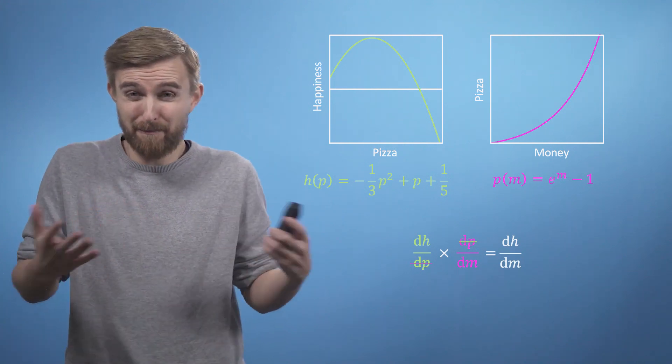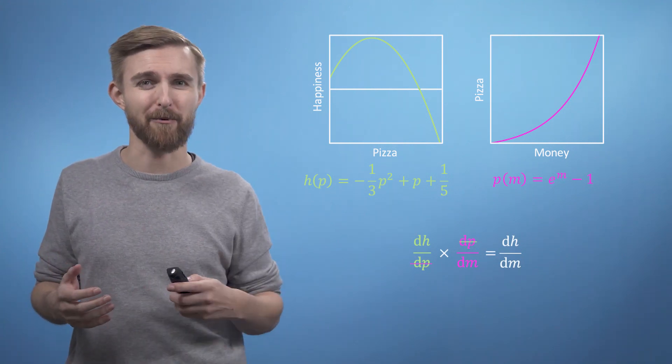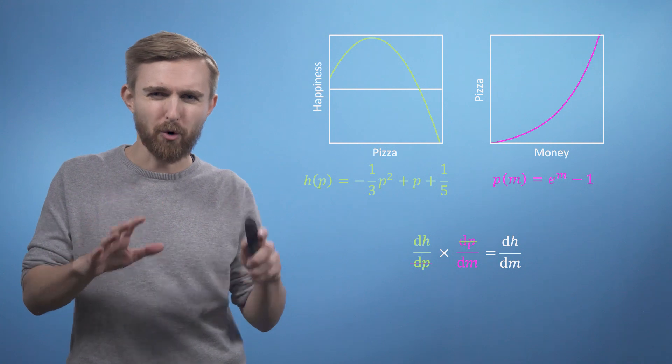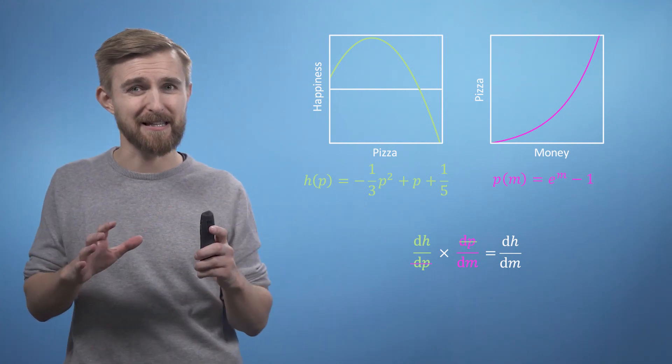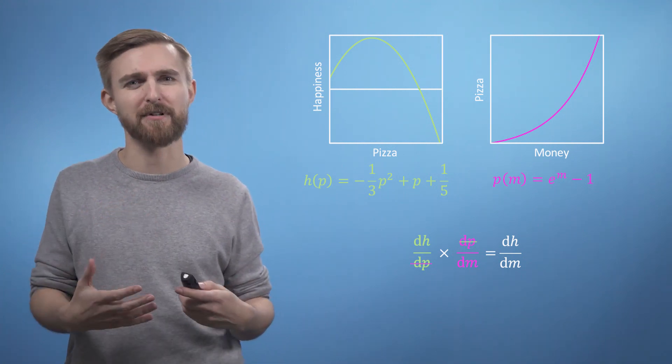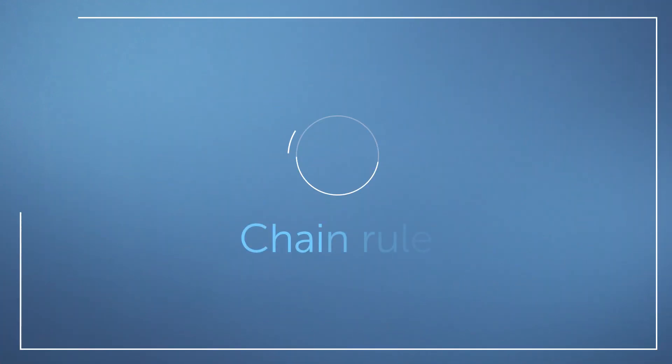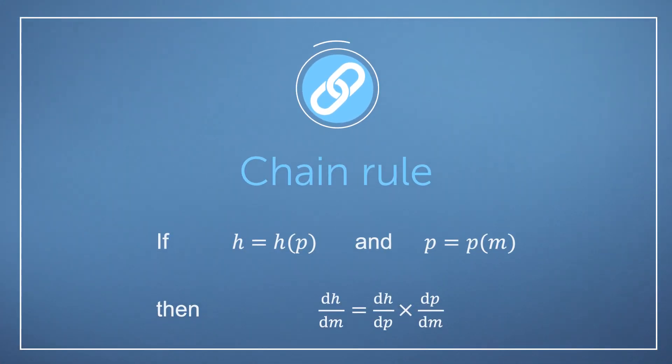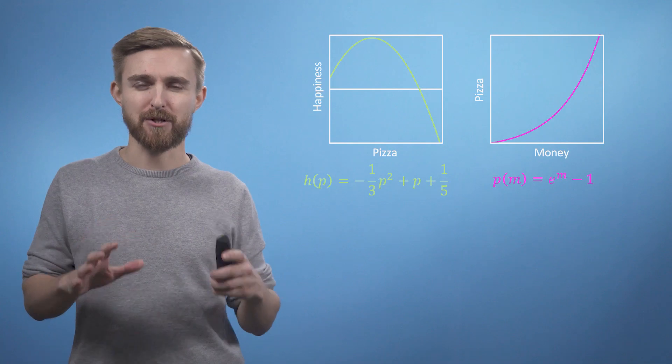And in actual fact, this is a perfectly sensible way to think about what's going on. This approach is called the chain rule, because in a sense we are making a chain of derivative relationships. Now this is certainly not what you might describe as a formal derivation, but it is already good enough to enable you to make use of the chain rule effectively.